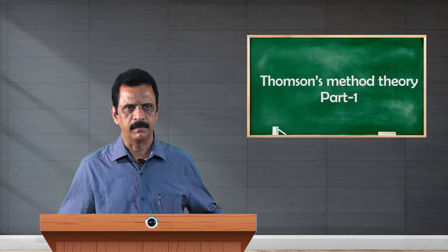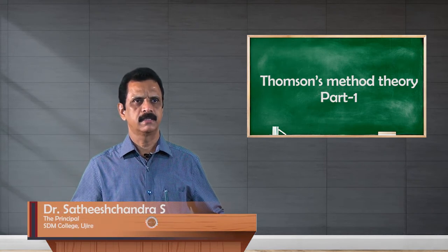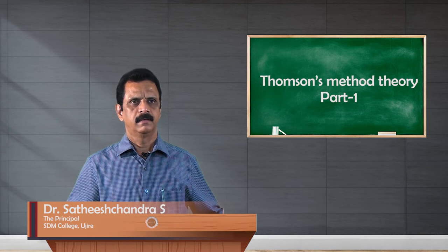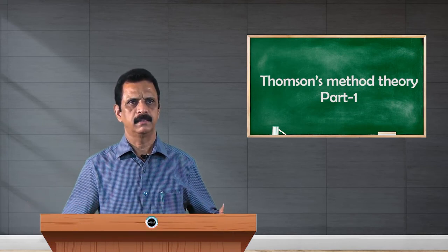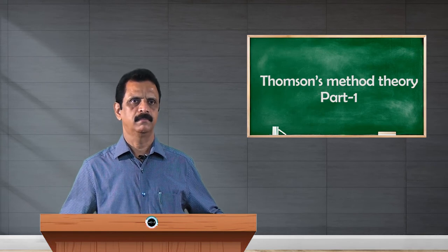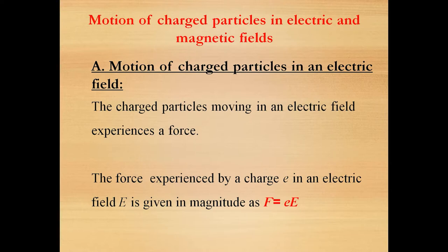Hi everybody. In the previous session, we have discussed about the principle of working of determination of e by m of electron by Thomson's method. The basic principle behind this experiment is subjecting a beam of electrons to electric and magnetic field and analyzing their path.